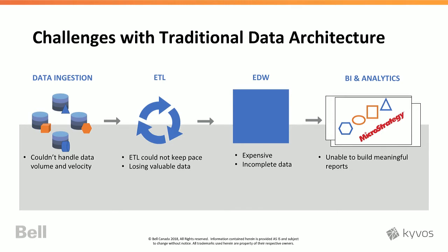Not only were we missing roughly half the data, what we were storing in our EDW was now very expensive to store and also incomplete, meaning any reports you built would always be questioned in terms of validity, because you're missing half the data and you just don't know which half. We thought about whether we should expand or fortify our existing ETL and ingestion pipelines, but we felt that would have been rather short-sighted, because we were definitely expecting more sources of similar size and velocity. So we disregarded that as a viable sustainable path and started looking for better ways to implement this.